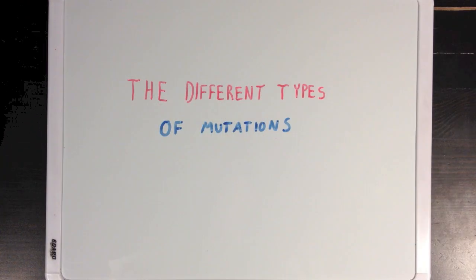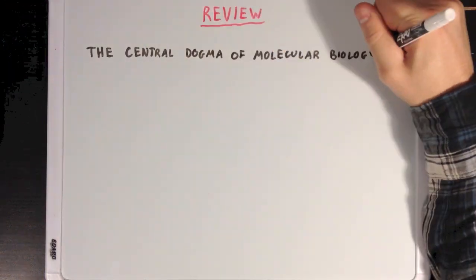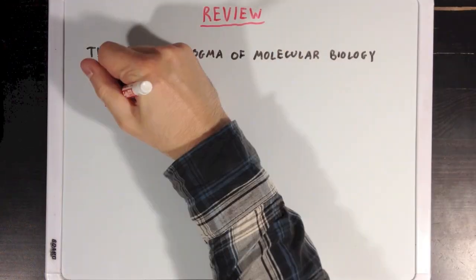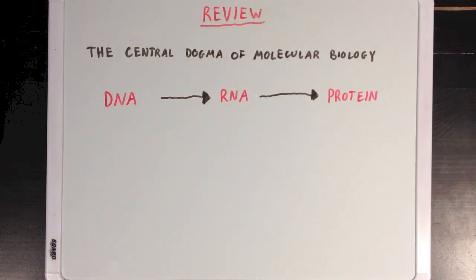Today we're going to talk about the different types of genetic mutations that you would find in a cell. But first, I want to review the central dogma of molecular biology, and how the genetic information of a cell is stored in the form of DNA, which is then transcribed to form RNA, and then translated to generate protein.